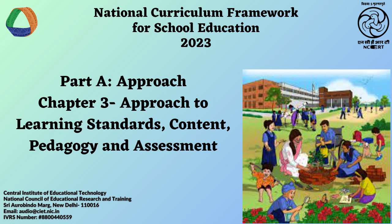Second, all objectives must be derived from the aims of education and together must achieve those aims — operationalised through rigorous flow-down. Third, the entire set of objectives must be cogent, consistent and connected, which is essential to achieving the aims. These objectives, starting from aims of school education, are referred to as learning standards in the NCF. Figure 3.1.1 illustrates: Aims of education → Curricular aims → Competencies → Learning outcomes.